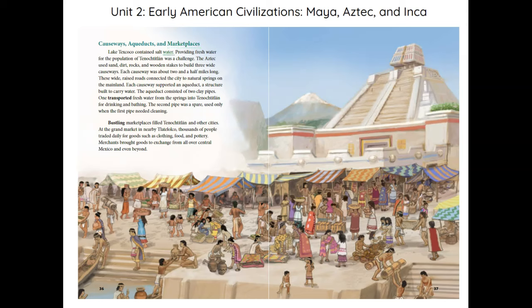Lake Texcoco contained salt water. Providing fresh water for the population of Tenochtitlan was a challenge. The Aztec used sand, dirt, rocks, and wooden stakes to build three wide causeways, each about two and a half miles long. These wide, raised roads connected the city to natural springs on the mainland. Each causeway supported an aqueduct — a structure built to carry water. The aqueduct consisted of two clay pipes: one transported fresh water from the springs into Tenochtitlan for drinking and bathing, while the second pipe was a spare, used only when the first pipe needed cleaning. Bustling marketplaces filled Tenochtitlan and other cities. At the Grand Market in nearby Tlatelolco, thousands of people traded daily for goods such as clothing, food, and pottery. Merchants brought goods to exchange from all over central Mexico and even beyond.